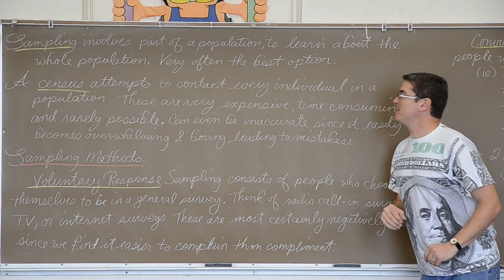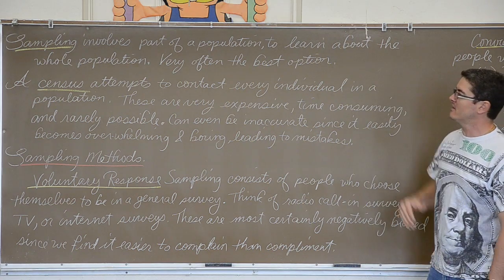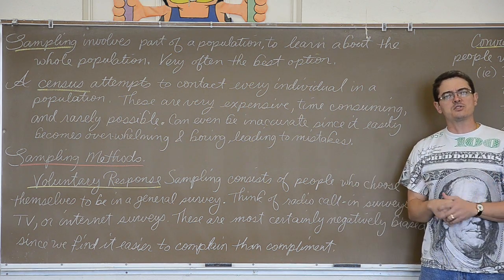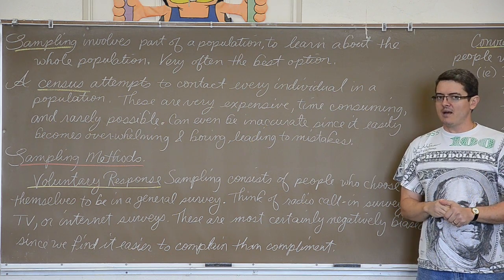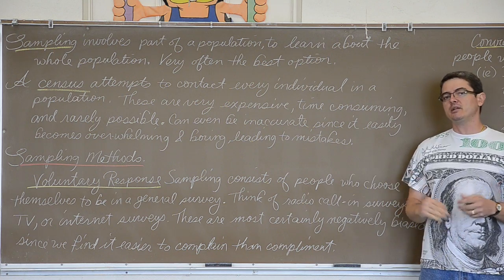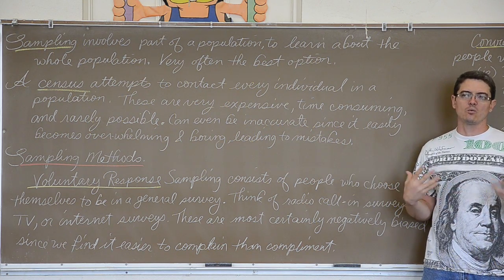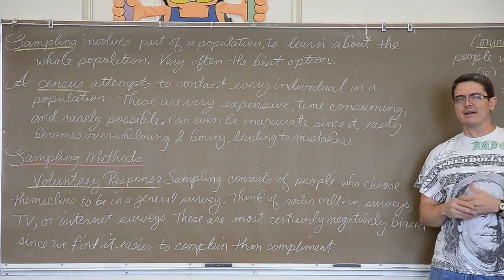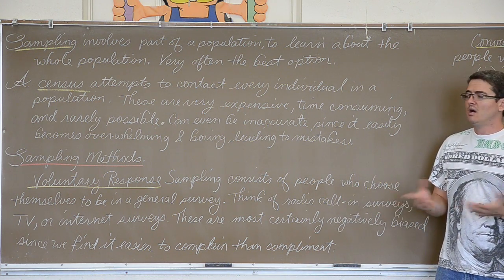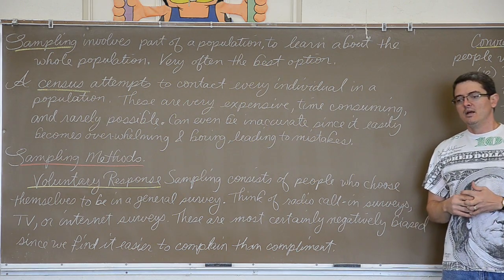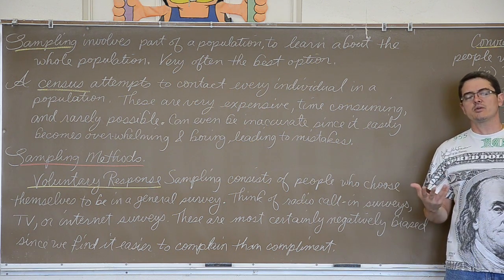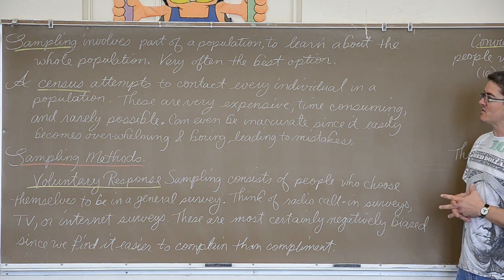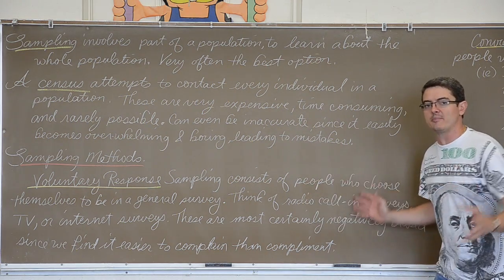Sampling involves contacting only part of a population, and it is very often the best option for learning about the whole population. Would I want to actually attempt to contact all 2,400 students at the school? That would be very time consuming and unnecessary — I could just sample about a hundred and get a very good idea of what the entire school feels. Similarly, I can't run a cholesterol experiment on every single person with high cholesterol; I'd just take a random sample. Think of how hard it is for a government to run a full census. So we normally work with sampling and then try to inference the results to the entire population.